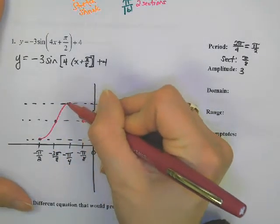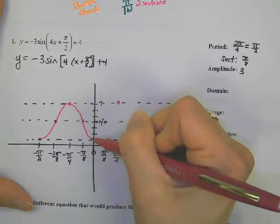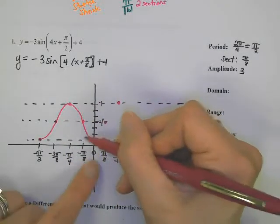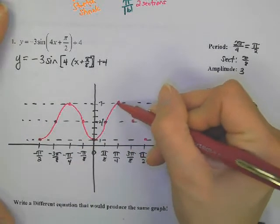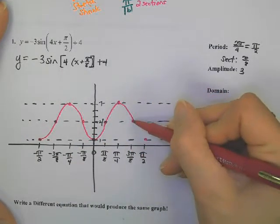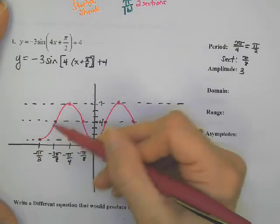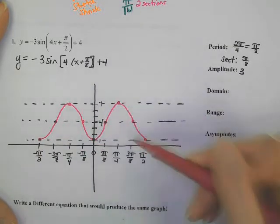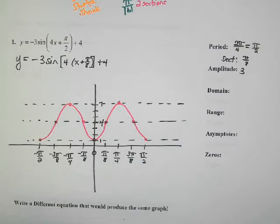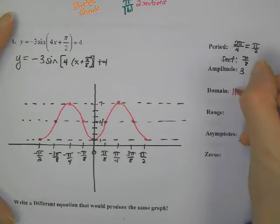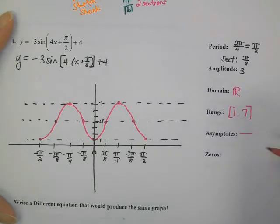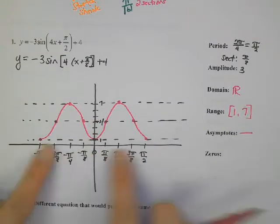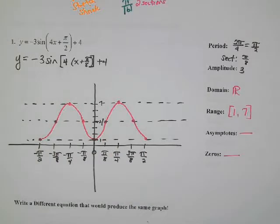Let's go ahead and graph this. Make sure you hit the y-axis — sometimes people forget. That's a special section. Check that you have two full periods. Domain for sine is always all reals. Range: as low as one, as high as seven. There are no asymptotes, and this sine graph does not touch the x-axis at all.